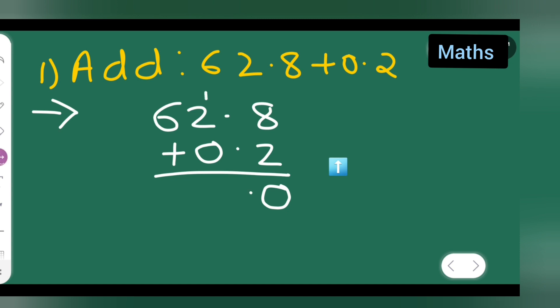So what you are going to get: 2 plus 1 will be 3. Okay, so you'll write down 3 over here. Then 6 plus nothing is there, so you'll have to write down 63.